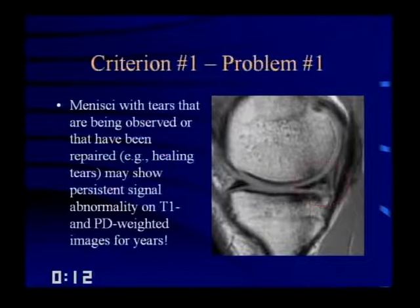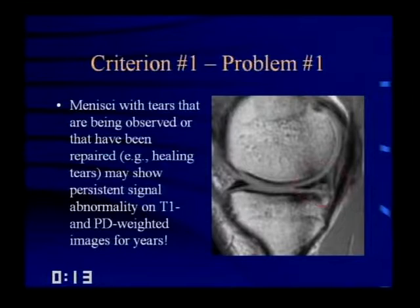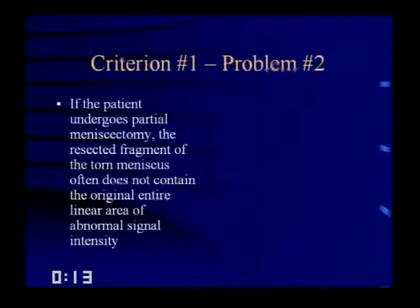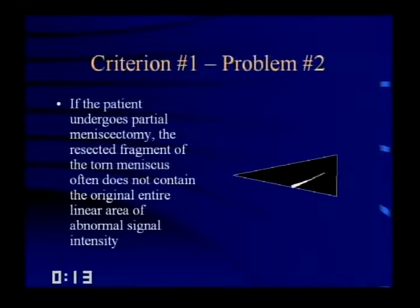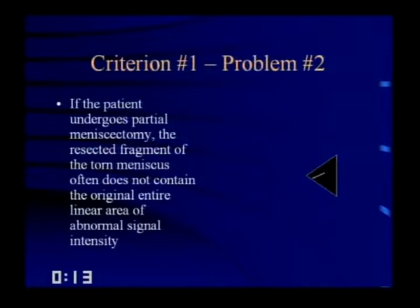Here's a schematic: the white part represents a tear, the gray represents adjacent degeneration. When the surgeon removes the torn fragment, some degenerative signal going to the articular surface is left behind — that can look like a tear but is usually ill-defined. Criteria number two — abnormal meniscal morphology — is also affected post-operatively. If a lot of meniscus has been resected, you expect some contour deformity, but you should never see a sudden change in contour or sharp edge, and you shouldn't see free fragments.